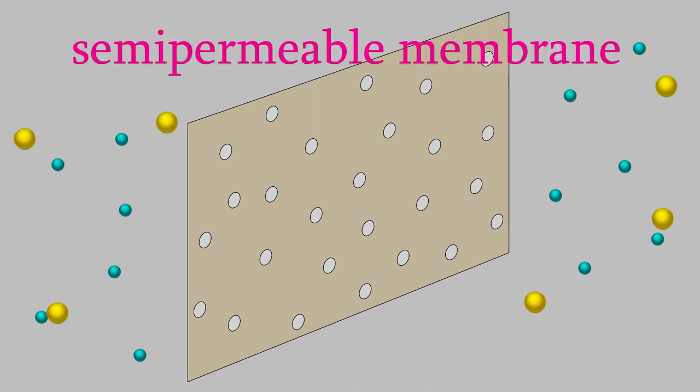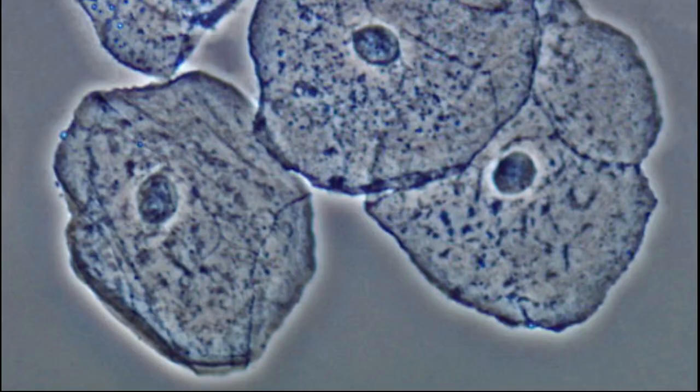And semipermeable membranes are crucial for understanding cells. What do membranes like this have to do with cells? Well, it turns out that the surface of a cell is a semipermeable membrane. All the cells in your body contain a fluid that's mostly made of water, and the water has a variety of solutes dissolved in it.